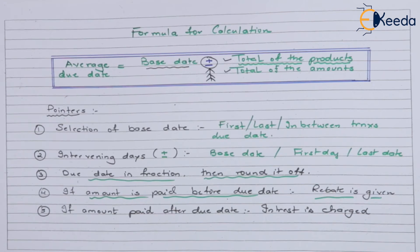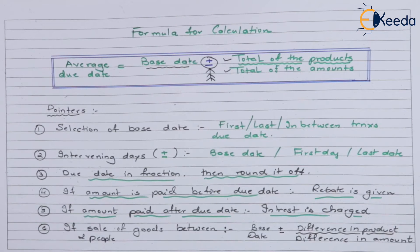The last pointer: if the sale of goods is between two parties - the contra sales we discussed - then the formula changes slightly. It becomes: Base date ± (Difference in the products / Difference in the amounts).